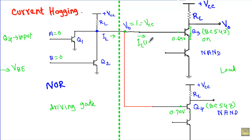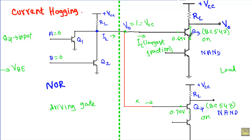Q3 draws the largest fraction of IL at its base terminal, so transistor Q4 does not get enough base current to go into the ON state. This is how Q3, by drawing the largest portion of the current, prevents all other transistors connected at that terminal from turning ON. This phenomenon is known as current hogging in a circuit.